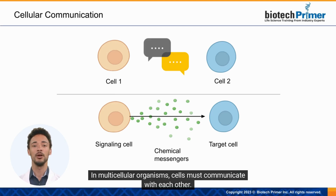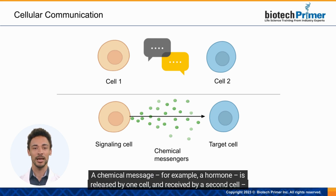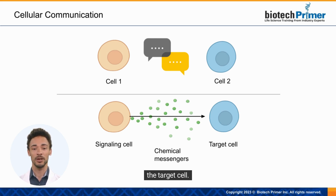In multicellular organisms, cells must communicate with each other. Since cells don't have mouths, ears, or access to email, they must rely on chemical messengers. A chemical message, for example a hormone, is released by one cell and received by a second cell, the target cell.